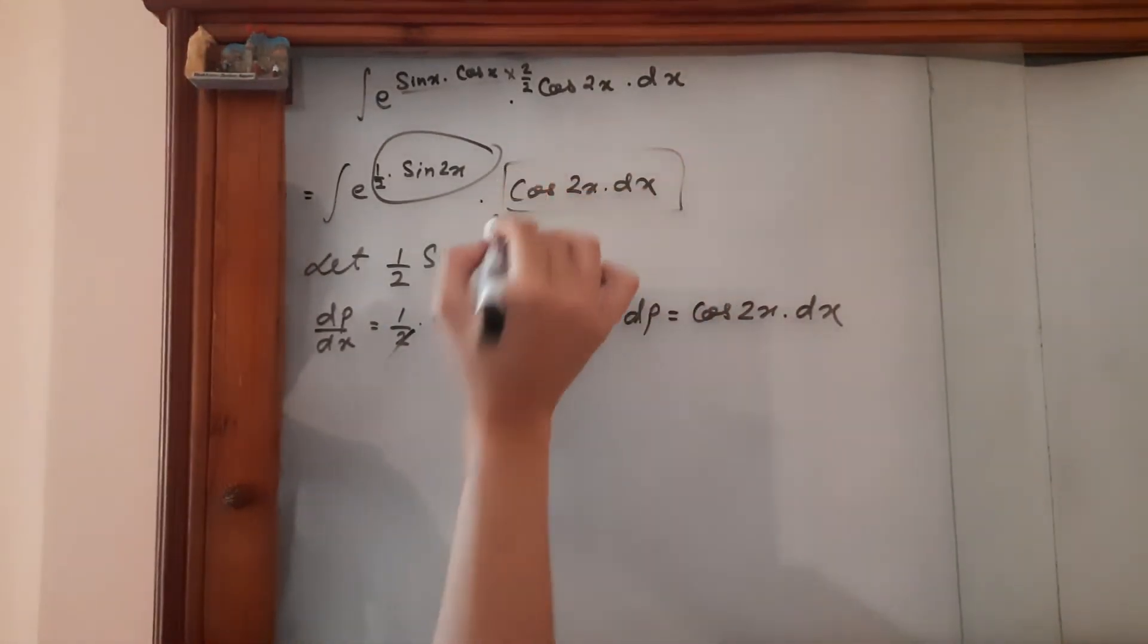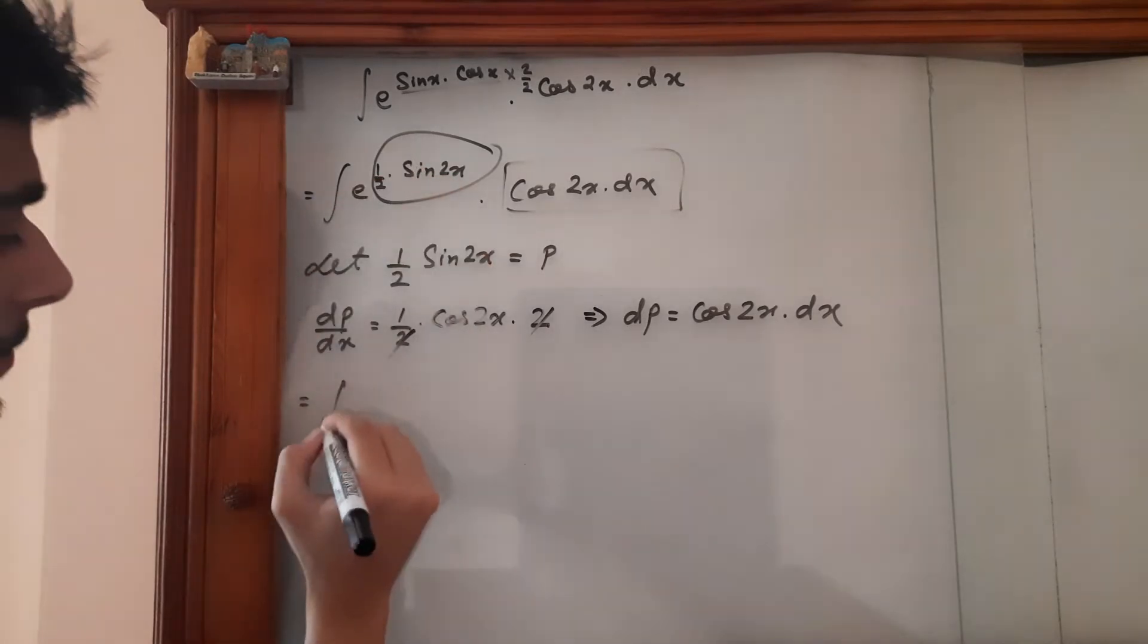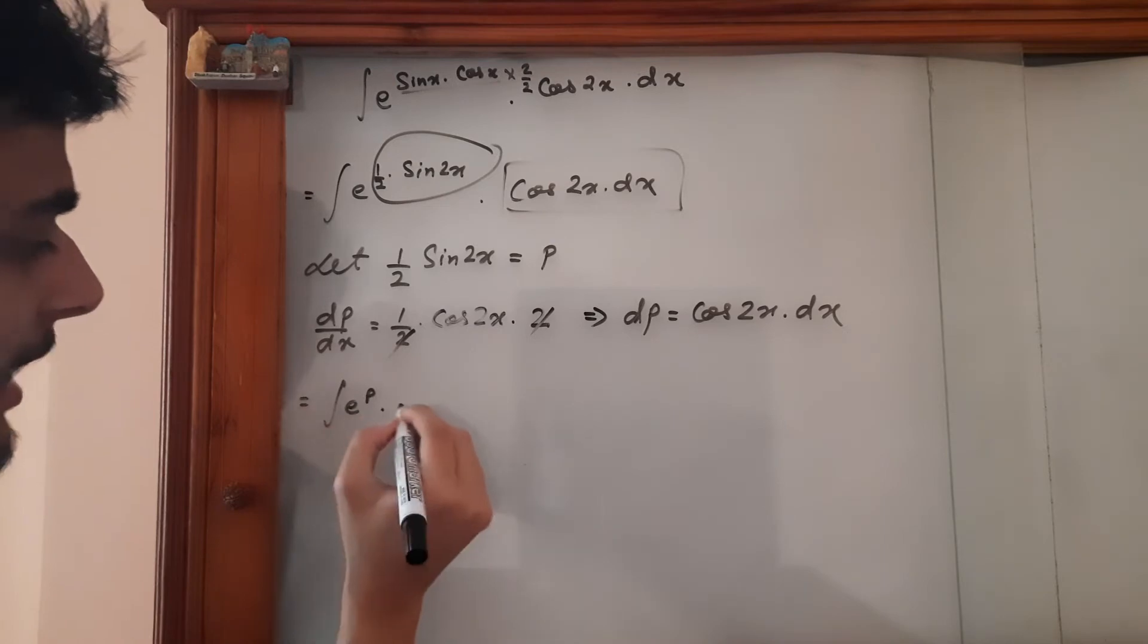Cos 2x times dx is equal to dp. And this is e to the power p. So is equal to e to the power p times dp.